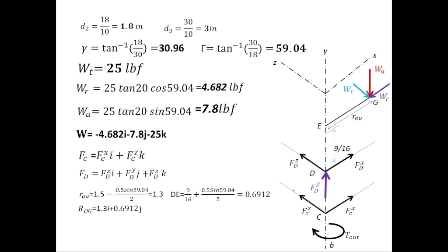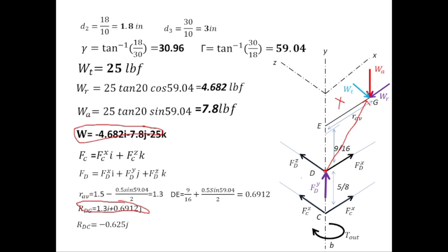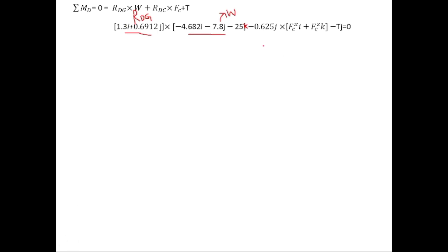The distance from D to C is 5/8 inches. Moving from D to C is in the negative y-direction, so r_DC = −(5/8)j. Taking the moment at point D: r_DG × W + r_DC × Fc + T_out = 0. The torque T_out is written with unit vector −j, because curling the fingers of the right hand in the direction of rotation makes the thumb point in the negative y-direction.